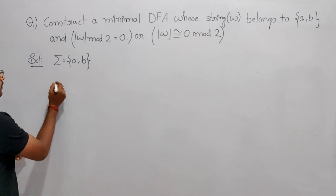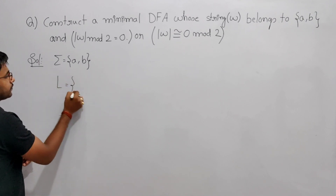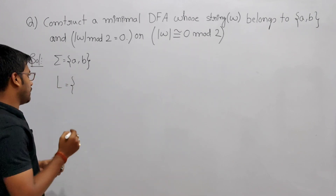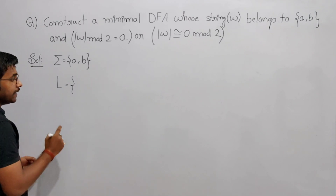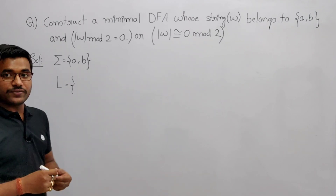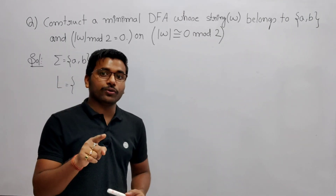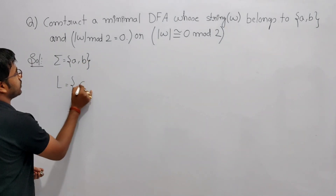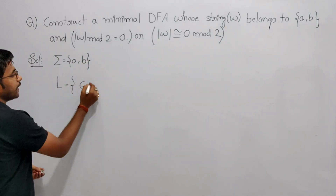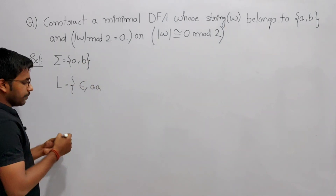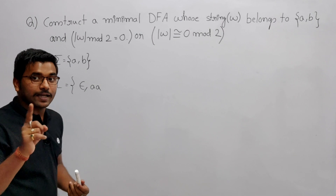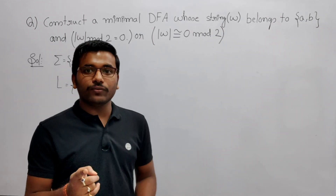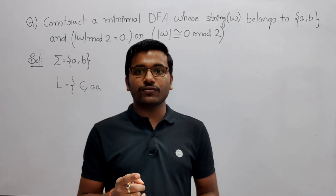Now think about epsilon. The length of epsilon is 0. When you divide 0 by 2 you will get remainder as 0, so epsilon belongs to this language. But single 'a' or single 'b' does not belong to this language — when you divide their length (1) by 2 you will get remainder as 1.